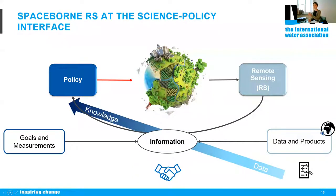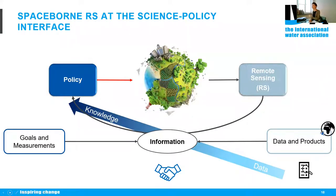When we look at remote sensing at the science-policy interface, we're looking at goals and measurements on the political side, the impact on our Earth, and how we can use remote sensing data and products to provide information that can be translated into knowledge and fed into the policymaking process to promote evidence-based policy. There are still gaps in application and challenges at this science-policy interface, including combining spatial, temporal, and thematic resolutions into information sensible for policymaking, and disseminating scientific evidence into the policy sector.